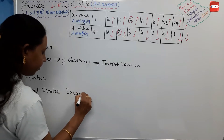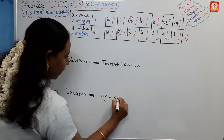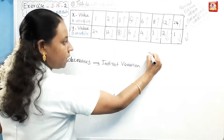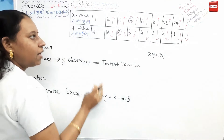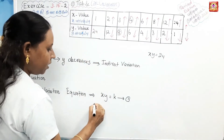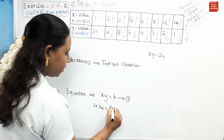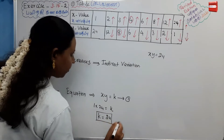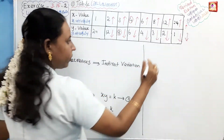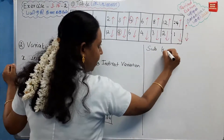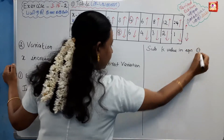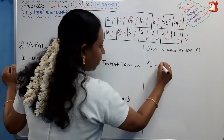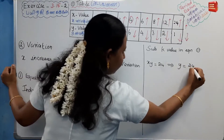The equation for indirect variation is xy equals k. In our problem, xy equals 24, so k equals 24. Substituting k into the equation gives y equals 24 divided by x. This is the equation we use to draw the graph.